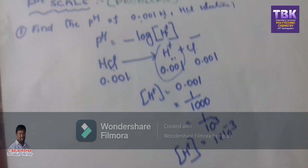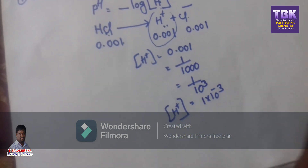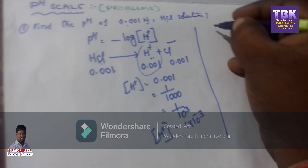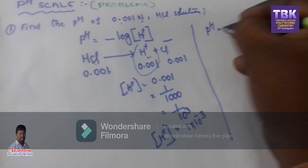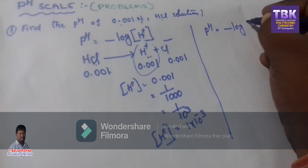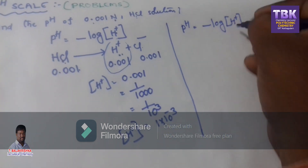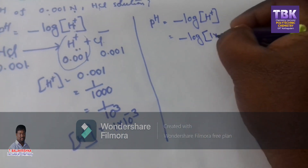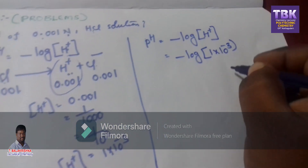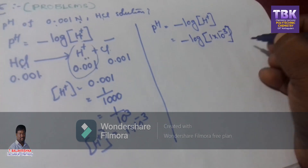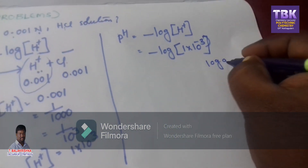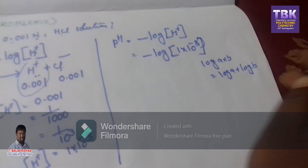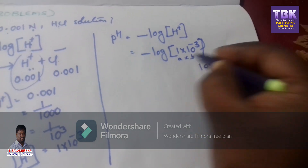H⁺ ion concentration is 1 × 10⁻³. Substitute this value in the above formula. pH equals minus log of H⁺ ion concentration. So substitute that value: minus log of 1 × 10⁻³.